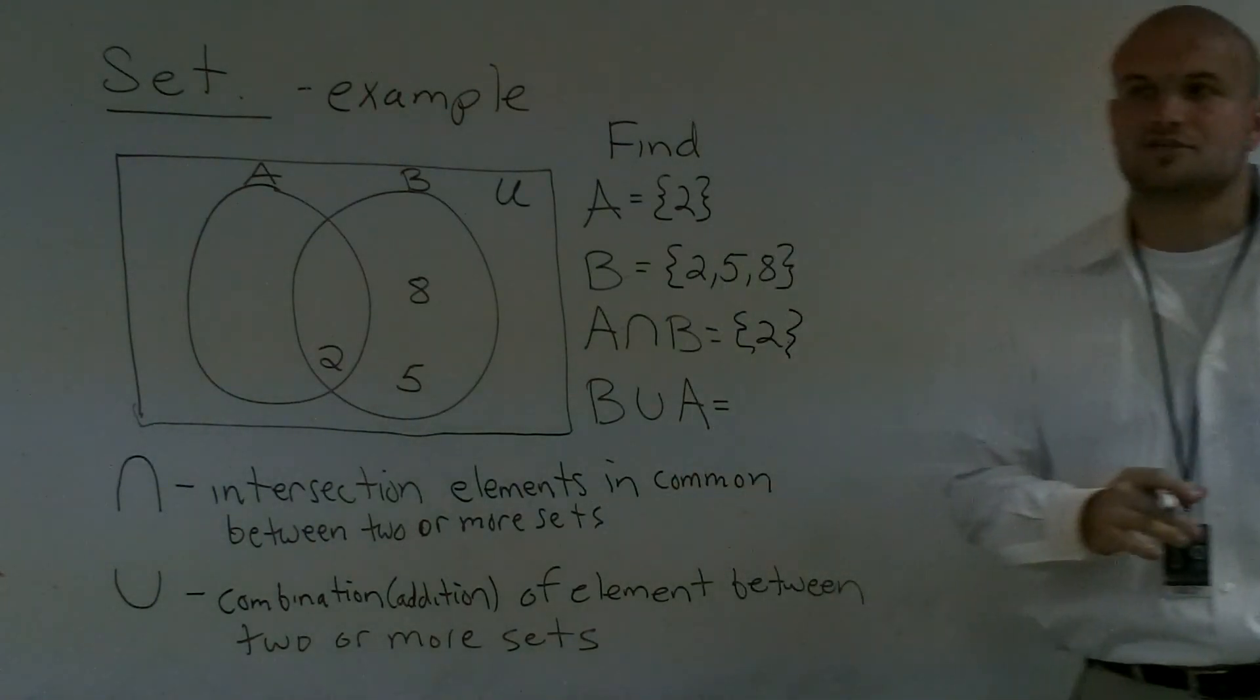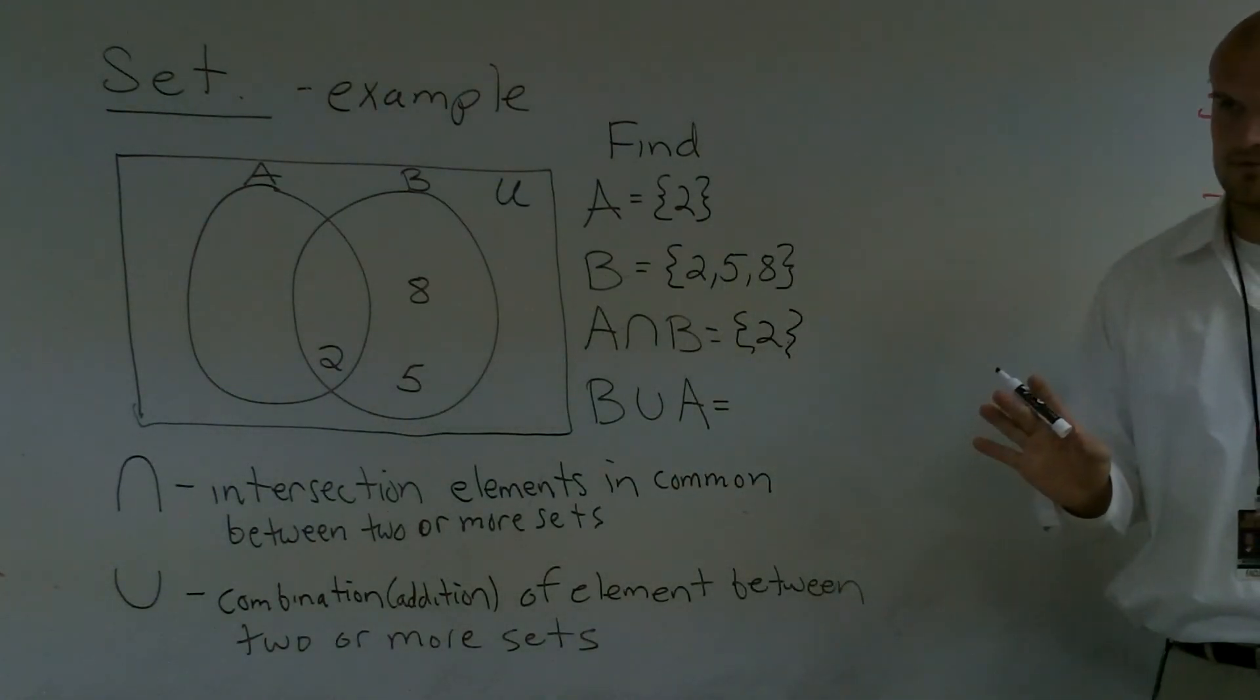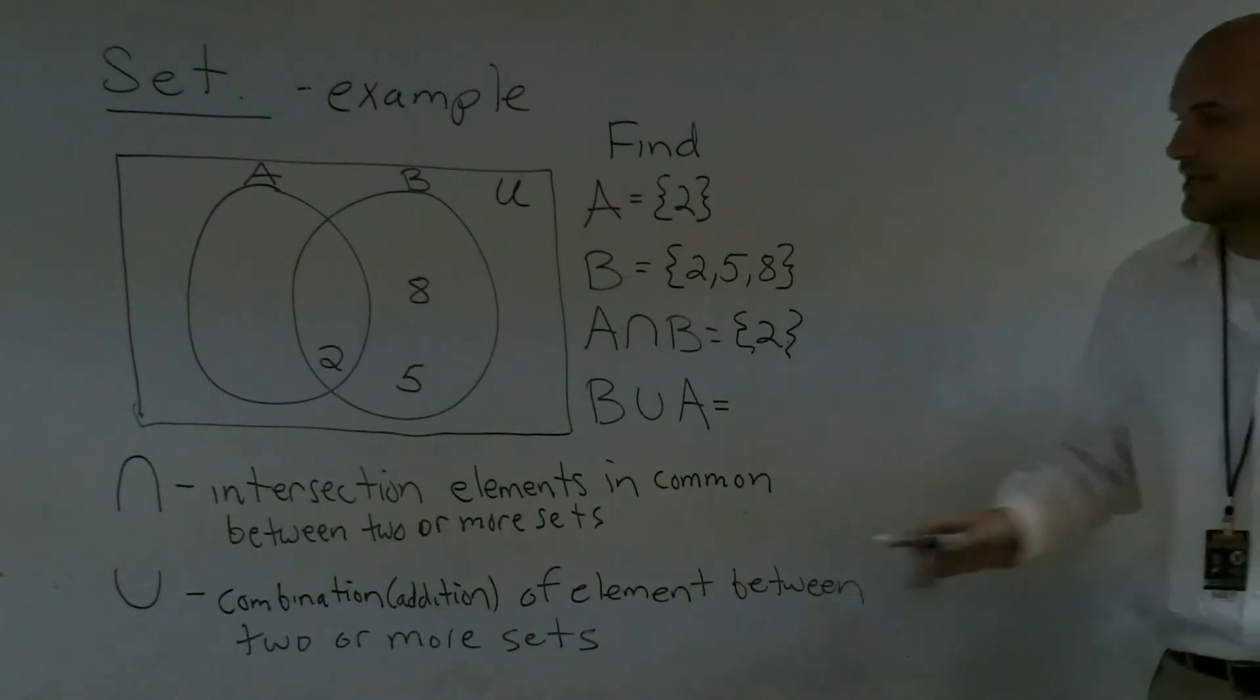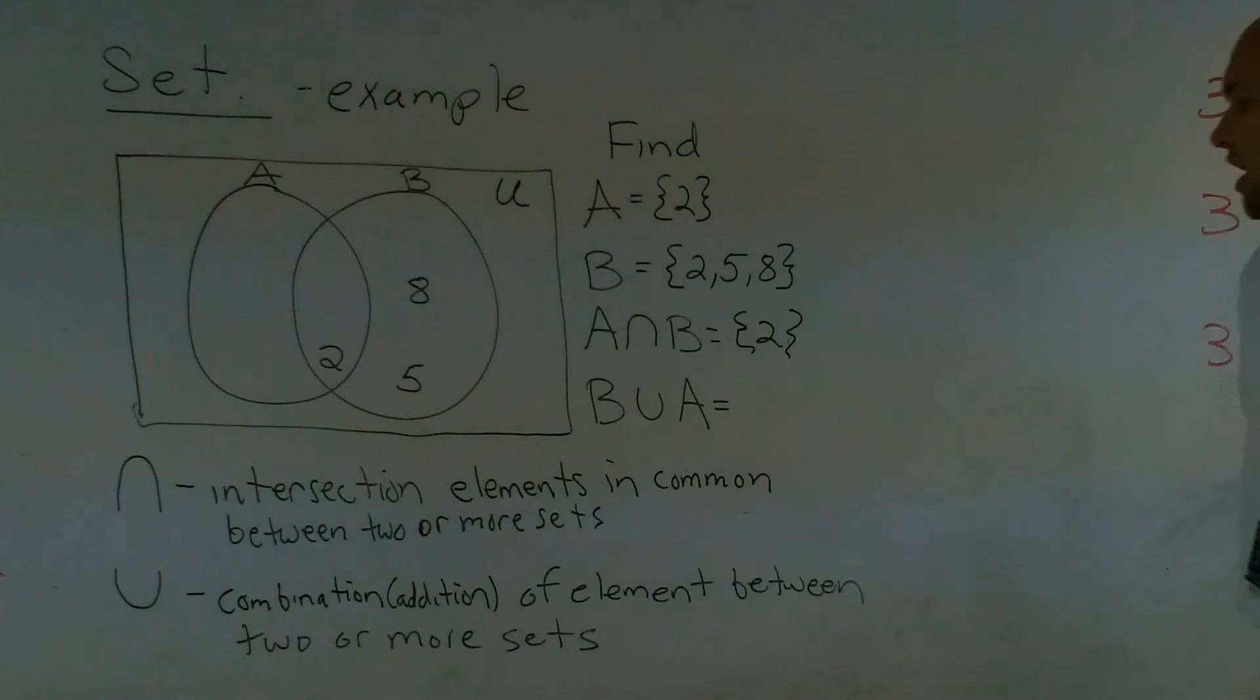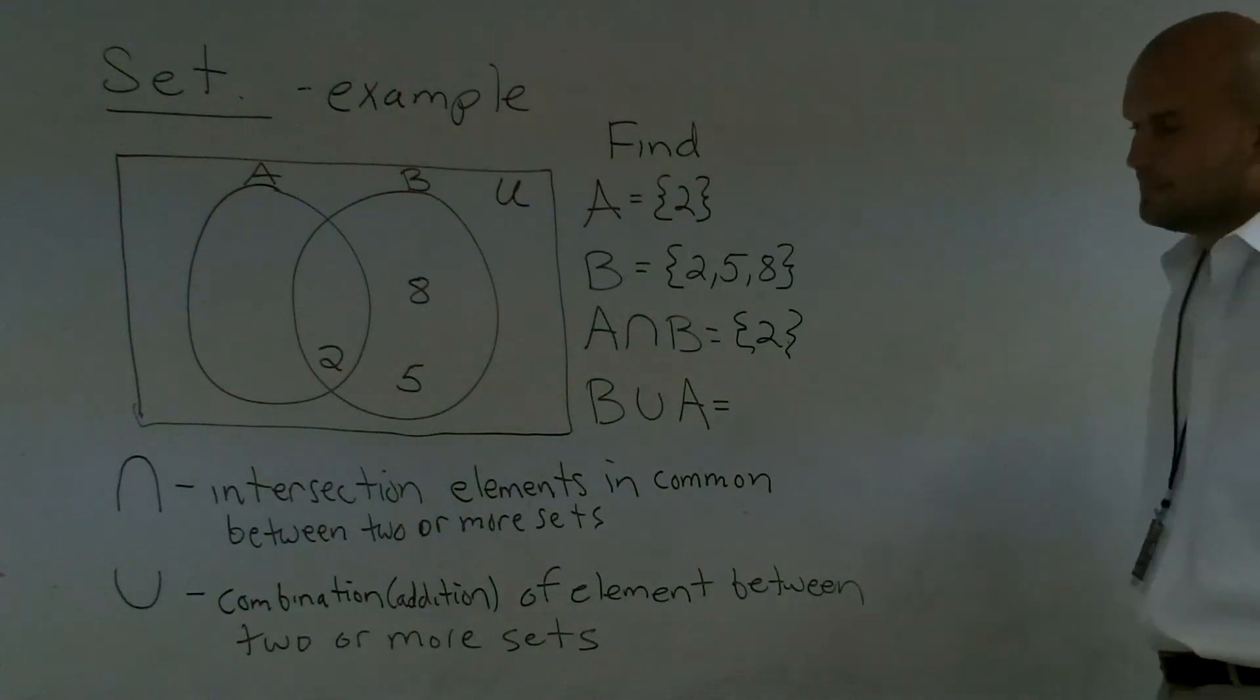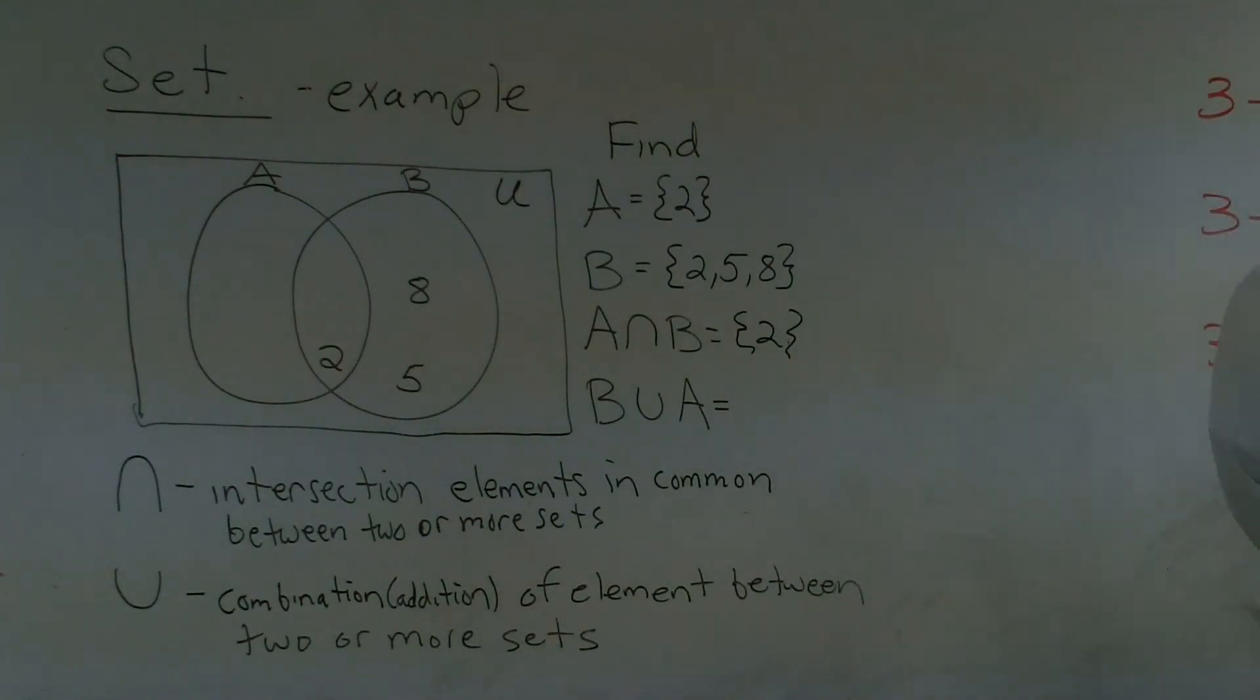Then, the last section, hold on. The last section is union. It's going to be the combination or addition of elements between two or more sets. So now, what would be the union between B and A?